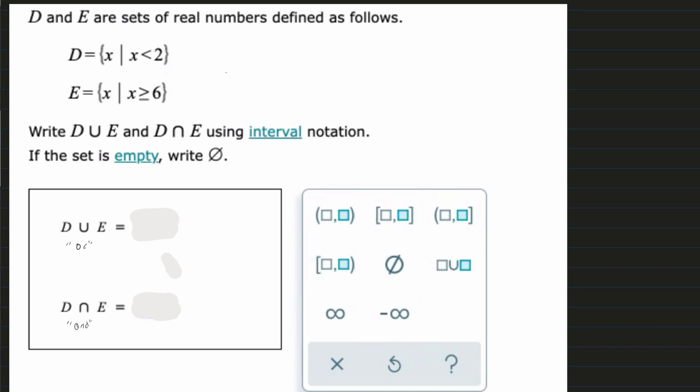So when we first start off, what we want to do is make a number line. So it's going to look something just like this. And we can start graphing our things. So for D, we're going to represent it in red. X has to be less than 2. So we're going to find 2 on our number line.